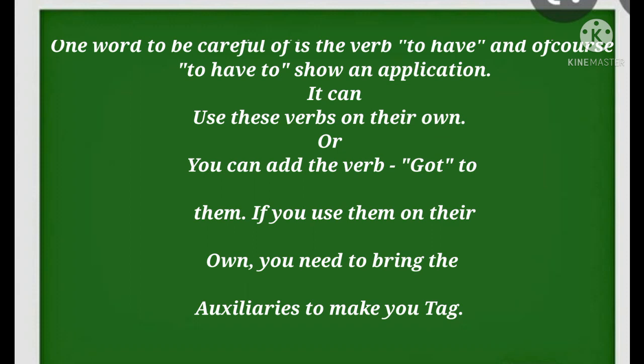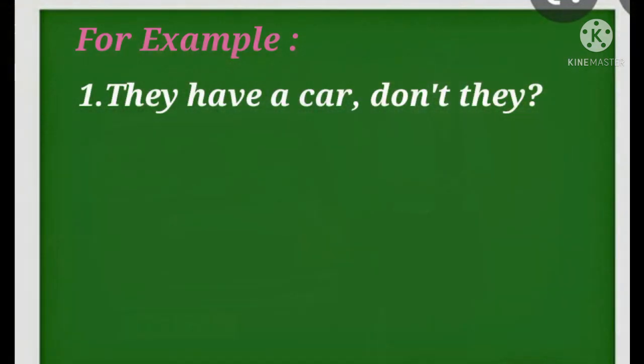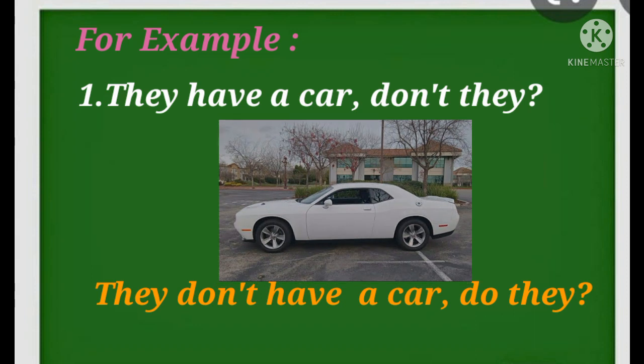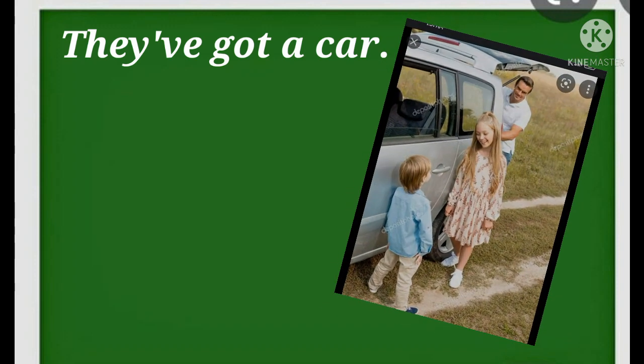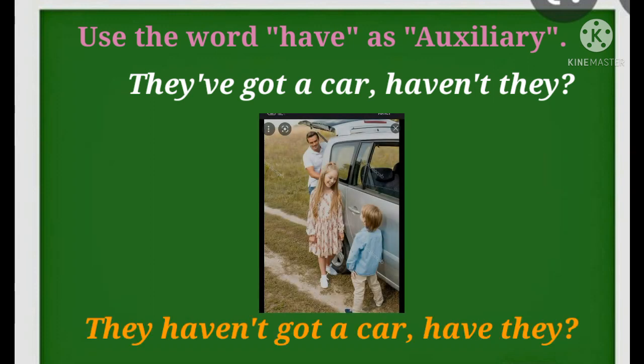Now, one word to be careful of is the verb to have, and of course to have to show an obligation. You can use these verbs on their own, or you can add the verb got to them. If you use them on their own, you need to bring the auxiliary to make your tag. They have a car, don't they? In the negative, you can already see the auxiliaries: they don't have a car, do they? If you use the word got with these expressions, you would end up with sentences like this: they have got a car, and this time you can use the word have as your auxiliary. They have got a car, haven't they? They haven't got a car, have they?